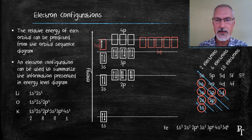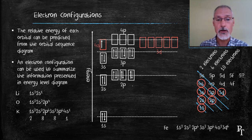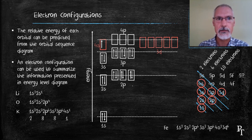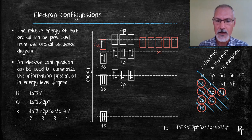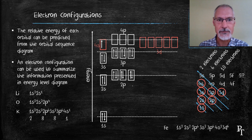One is often asked how many of these configurations you need to know. Well, you need to understand the pattern, but you should be able to do electron configurations up to the element krypton in the periodic table. Thanks for watching, and if you have any questions, don't hesitate to post them.